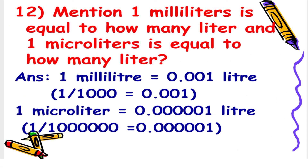Next: 1 ml is equal to how many liters, and 1 microliter is equal to how many liters? The answer is 1 ml is equal to 0.001 liters, and 1 microliter is equal to 0.000001 liters.